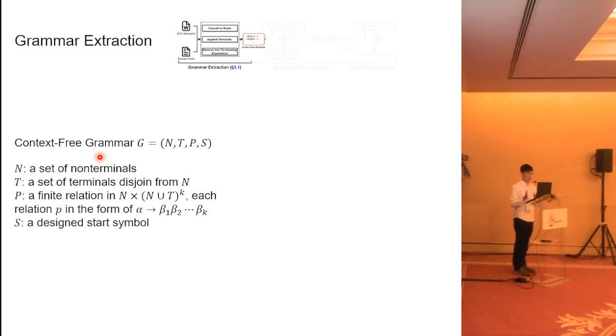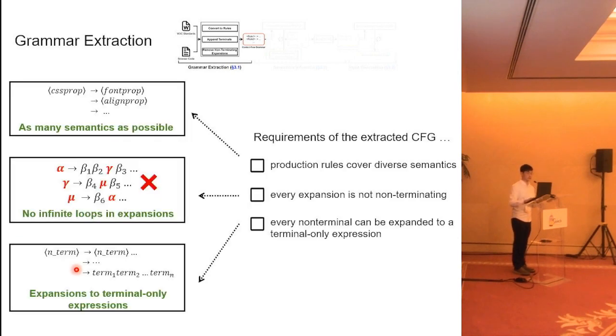The first step is grammar extraction. In this step, we transform the W3C standards into a context-free grammar, which we shorten as CFG. As we all know, a CFG is a tuple of NTPS, where N is a set of non-terminal symbols, T is a set of terminal symbols, and P is a set of production rules, which maps from a non-terminal symbol to a sequence of symbols. And S is a desired start symbol. We want to construct this CFG to facilitate our fuzzer.